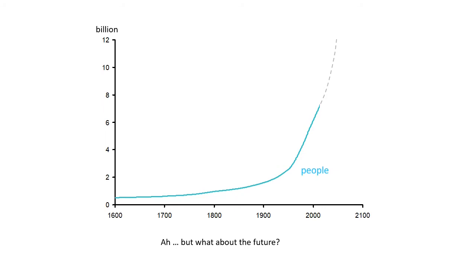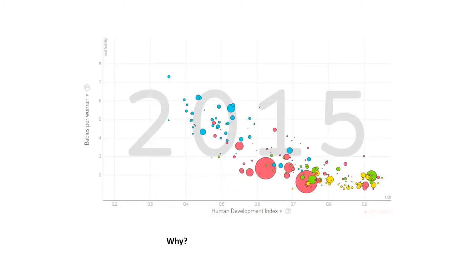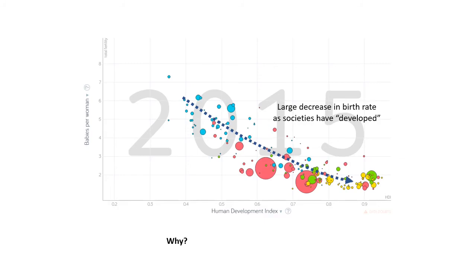But what about the future? Well, the population forecast looked like this — population growth is slowing down fast. And this is something that Boserup and Malthus hadn't taken into account in their original ideas. As societies have developed through all that innovation that Boserup expected, there's been a large decrease in the birth rate. Women are having fewer and fewer children. In fact, in many countries, birth rates have fallen below two babies per woman, meaning populations are going to start falling.